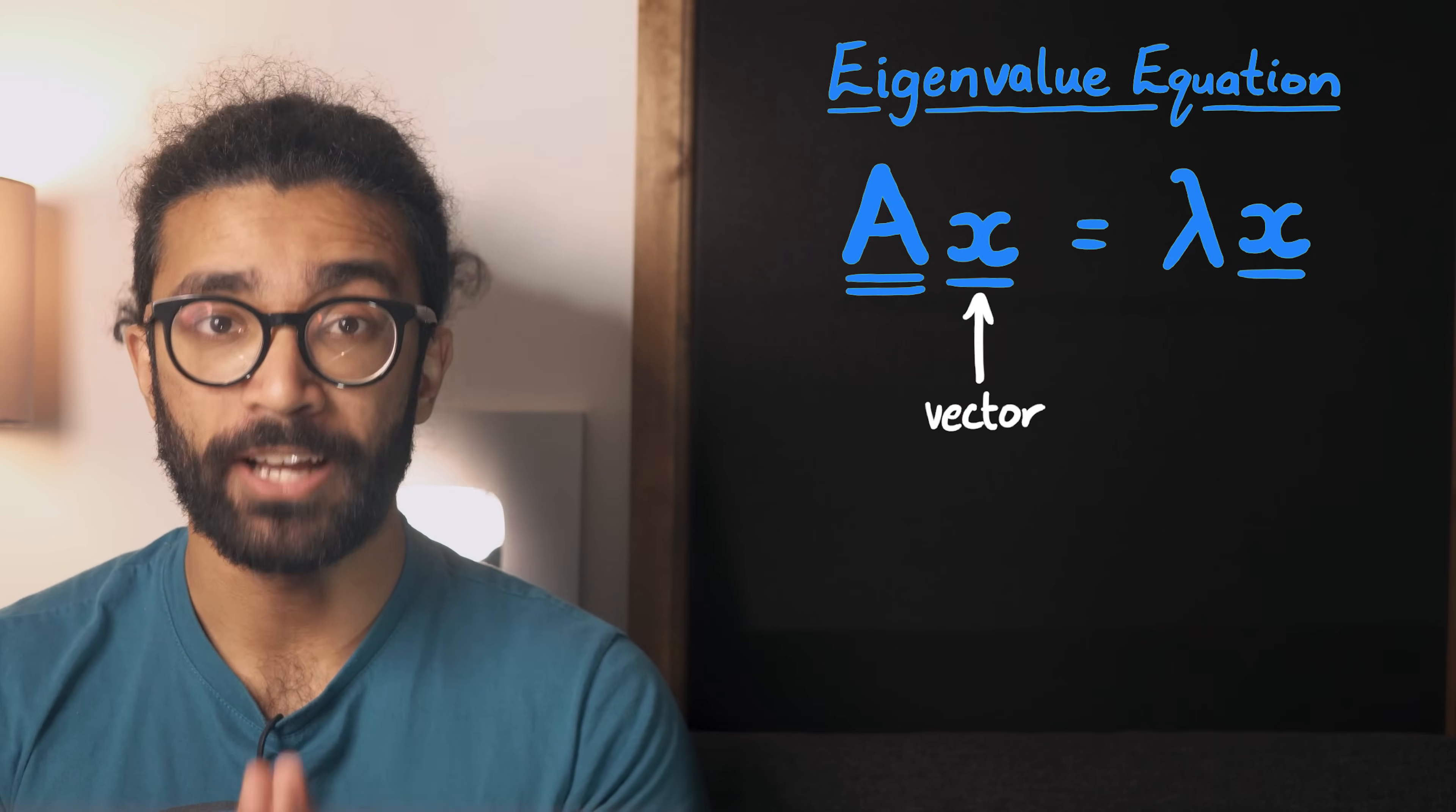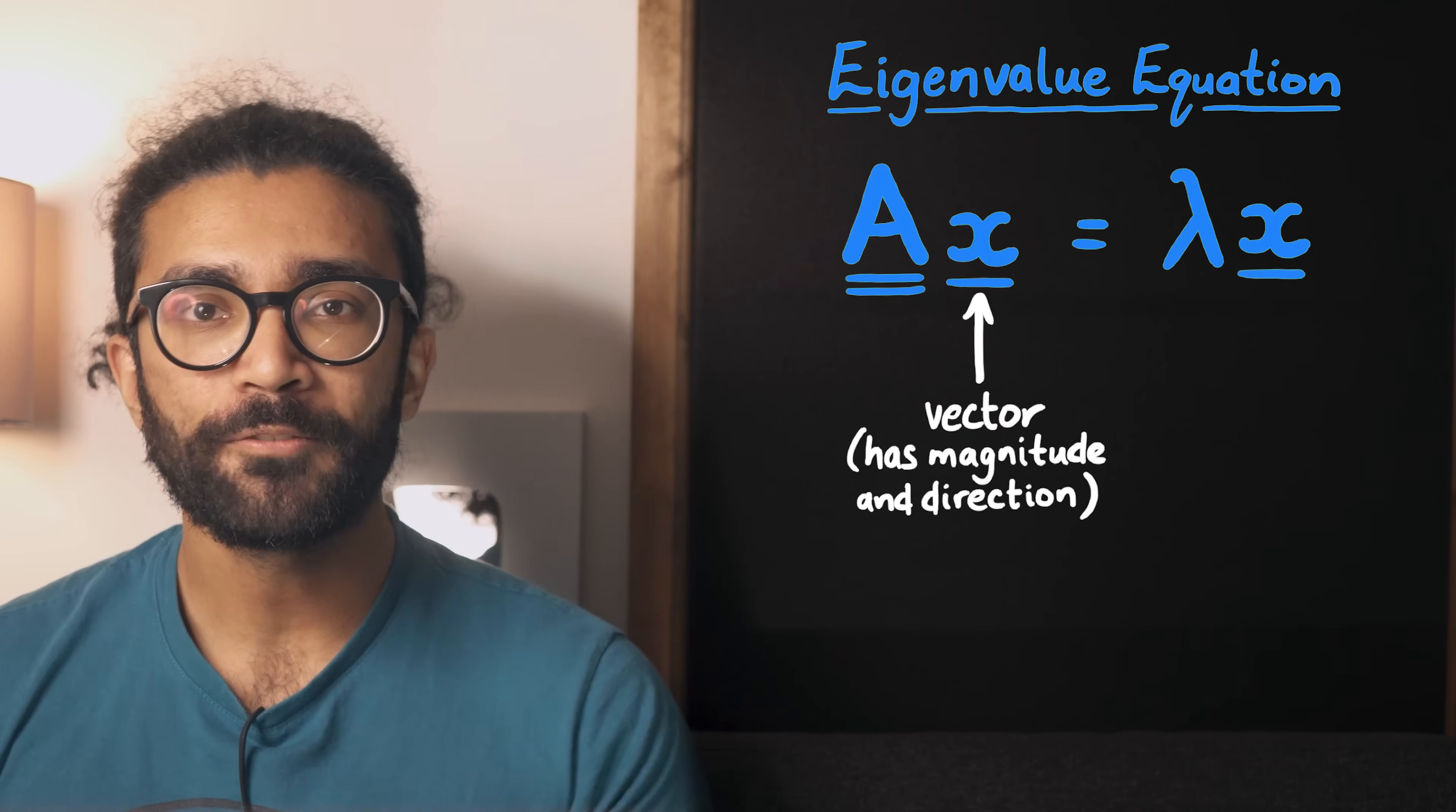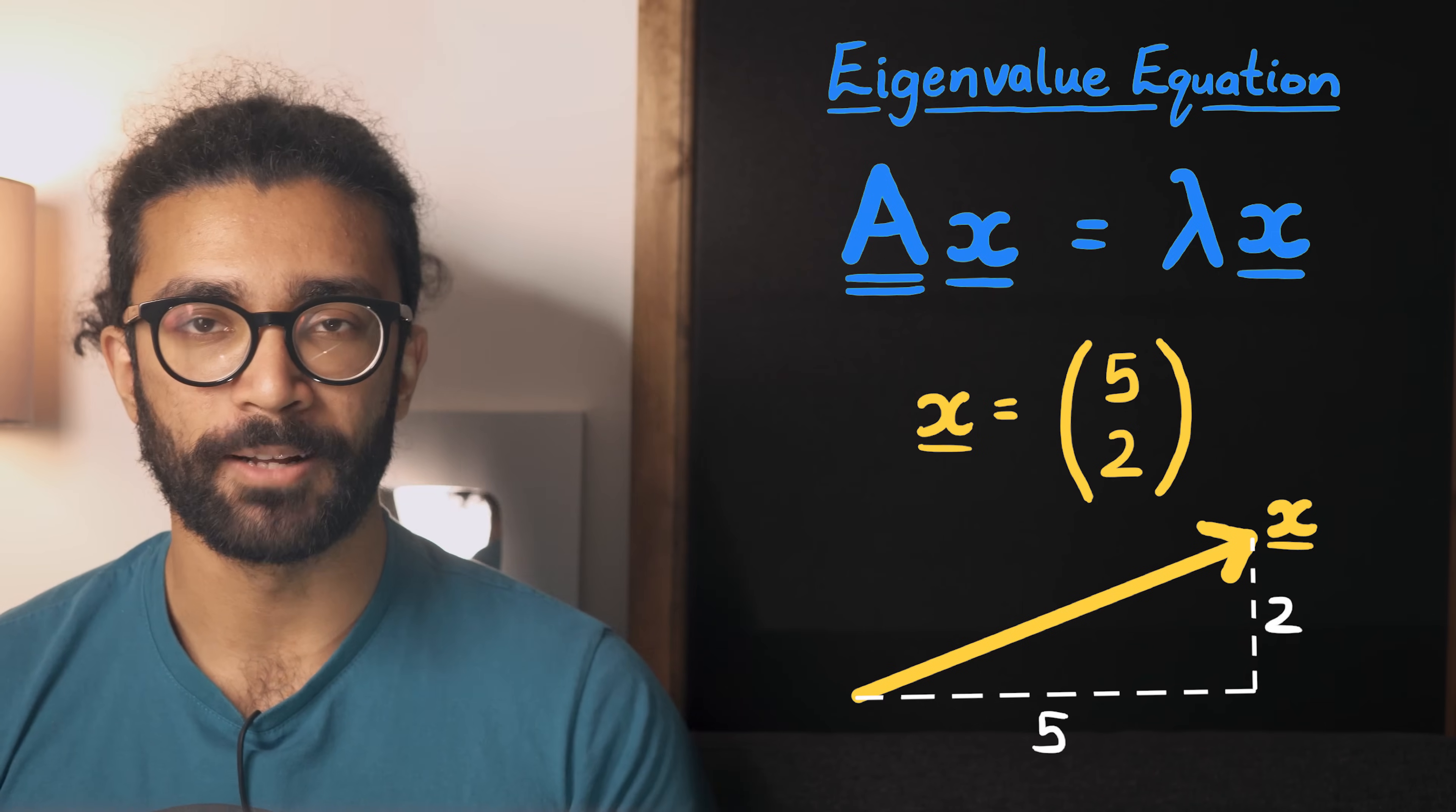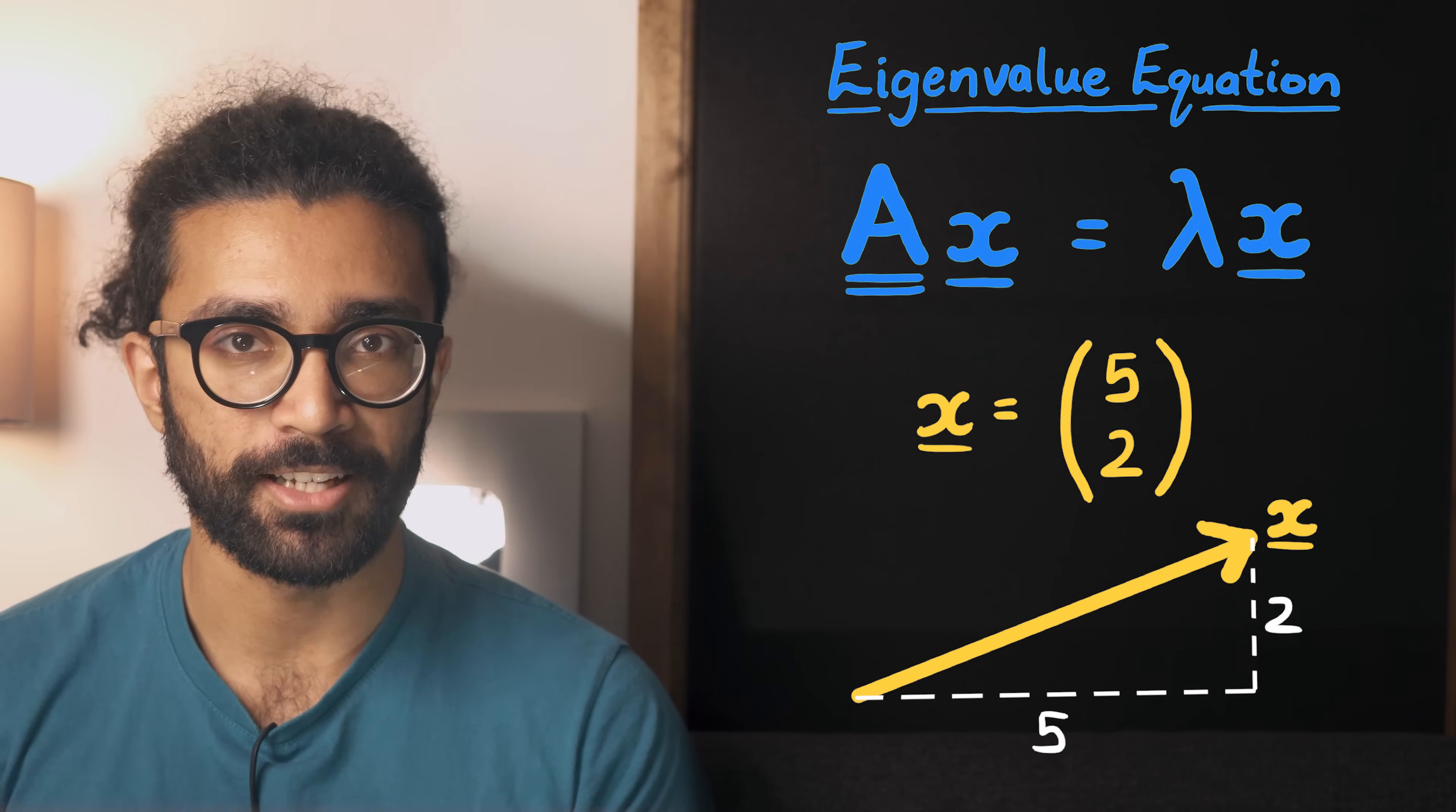We can think of x as a vector. A vector is just any quantity that has some size and some direction, so we often represent vectors with arrows. Another way to represent a vector is like this, showing the horizontal and vertical component of the vector. These two pieces of information automatically encode both the size and the direction of the vector.